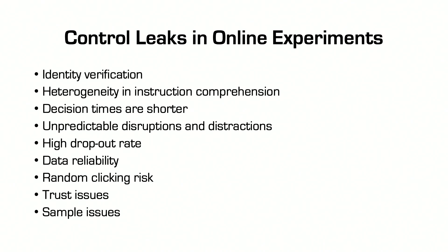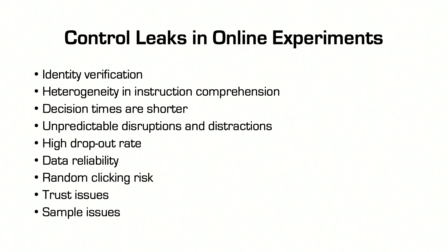There are also trust issues. Online subjects might not trust that there is a human on the other side, or may not understand that you are a researcher rather than a commercial entity running studies — all these things can affect online experiments. And of course there are sample issues. An online panel is normally different from the panel you would get in the lab. For example, if you are working with the general public in the lab you could get people of all ages, but elderly people are probably not as engaged with online platforms, so you would not have them in your sample.